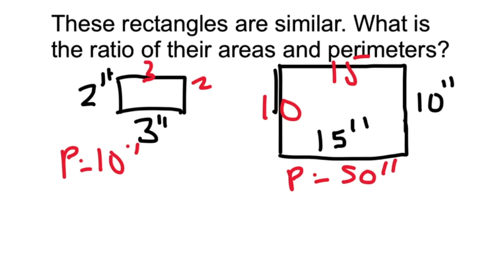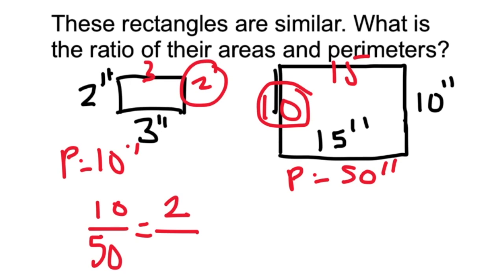So the ratio of the perimeters is 10 to 50. It matches the ratio of the sides. So the 10 belongs to the small rectangle. Let's look at the width of the small rectangle and put 2.